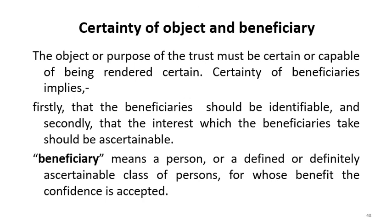Now we will see certainty of object matter, object and beneficiary. We have seen intention to create the trust, fiduciary obligation, and surrounding circumstances in which the court will decide. Here we will see certainty of object and beneficiary. The object or purpose of the trust must be certain and capable of being rendered certain. Certainty of beneficiaries implies two things: firstly, the beneficiary should be identifiable; secondly, the interest which the beneficiaries take should be ascertainable.